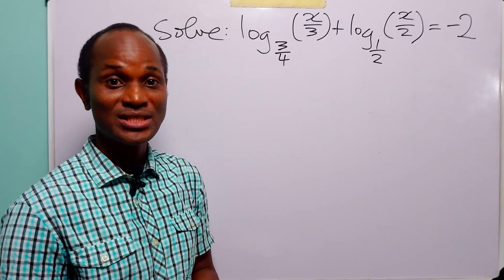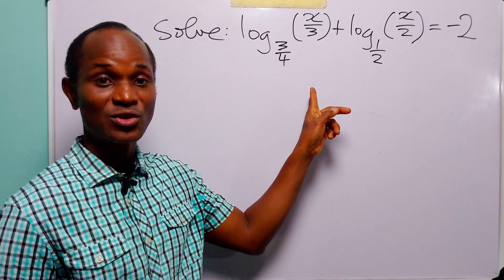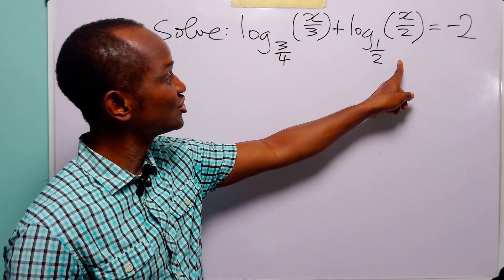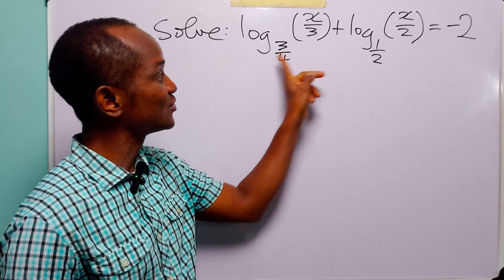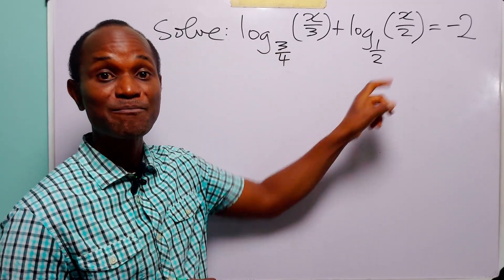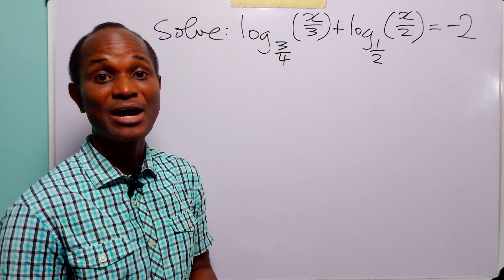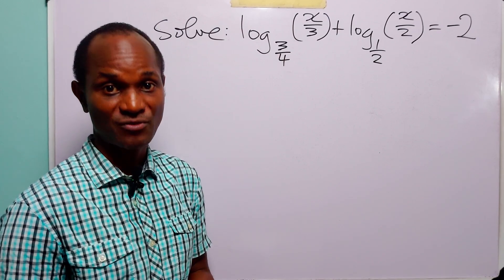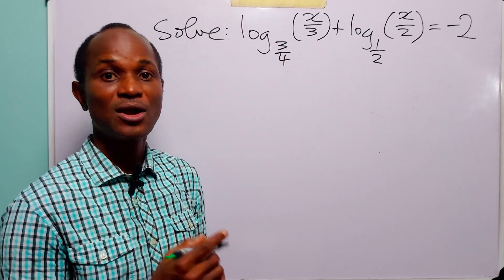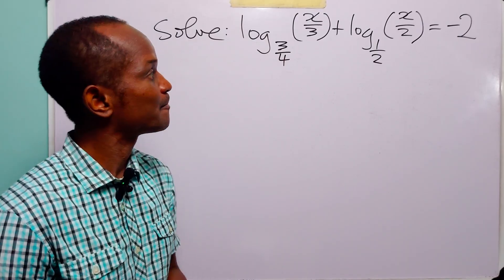So, of course, you know that the first step to solving this logarithmic equation is going to be to make sure that we change these two log terms into the same base. And to do that, we are going to use our change of base formula. Now, the question is: what new base are we going to work with?